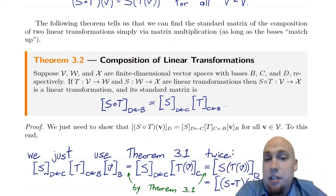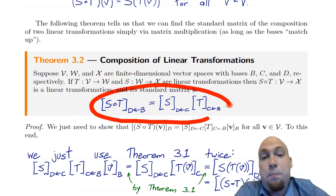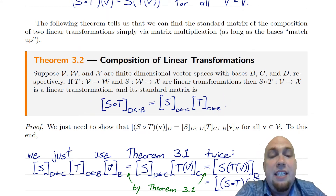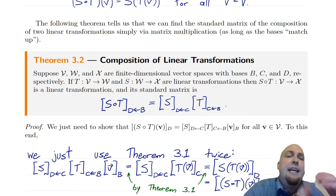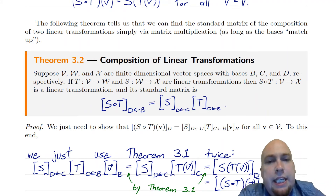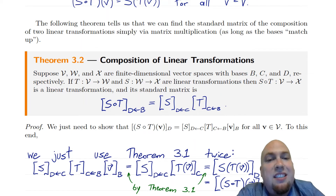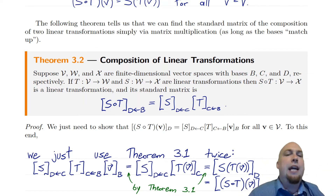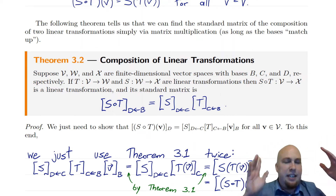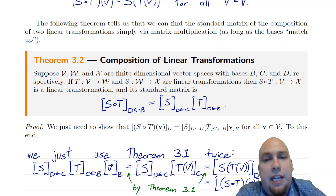Furthermore, the standard matrix of s composed with t is the product of the individual standard matrices. Notice that we designed the notation so that works out really nicely. On the right-hand side, the c's match up and you can think of them as almost canceling out, leaving just b going all the way to d — just like on the left-hand side, the b basis is mapped to the d basis.